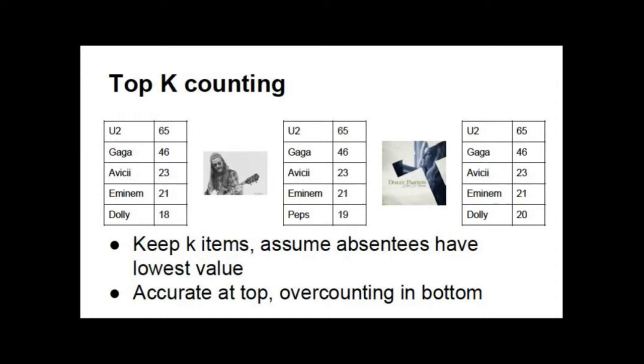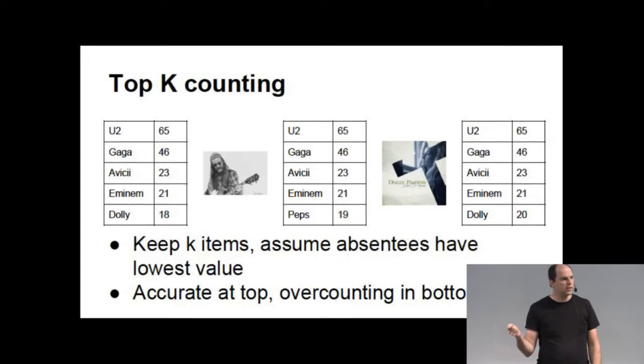So this one is actually really trivial. You just keep the top list of K items. And you assume that if you get something that is not in the top list, it has the same count as the lowest thing in your top list. So if some weird Swedish artist comes along that is actually not very popular, you assume that he is as popular as the bottom item, Dolly Parton in this case. And you massively overestimate his popularity. But he will be kicked out fairly soon, so it doesn't matter. And if you just keep the top K large enough, you will have accurate counts at the top. And not so accurate count at the bottom, but just expanded enough.